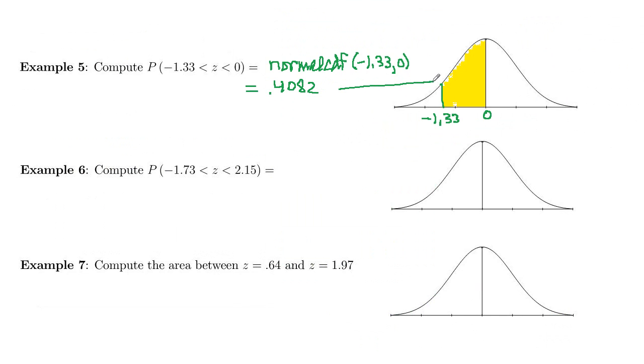And that is also that area. So probability that z is in this range is 0.4082, that's also 40.82% of the area, and 40.82% of the data in proportion.